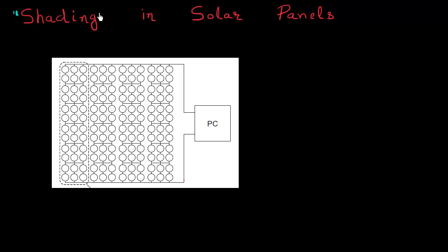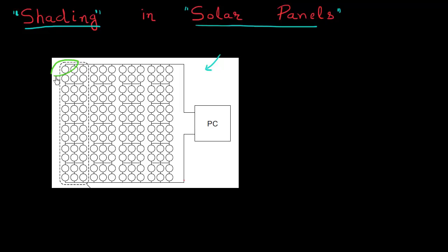Hello folks. In these next few videos, I want to talk about the issue of shading and how it affects the performance of a solar panel. Let's say I have this solar panel, and on one nice and sunny day, a leaf falls from a nearby tree and blocks a few cells. I want to understand how much is the degradation in the power output of my panel which occurs due to this leaf.